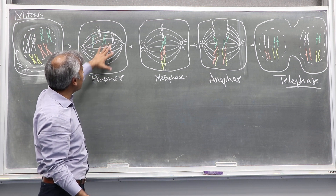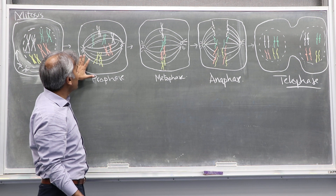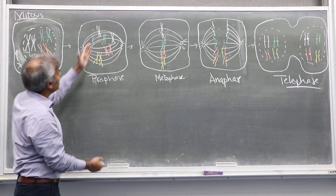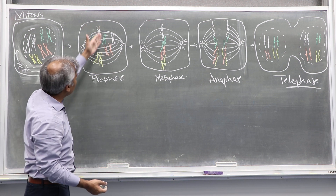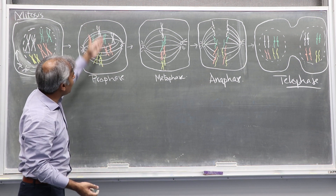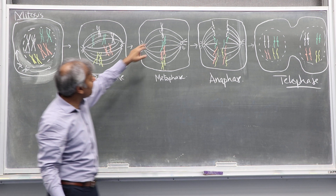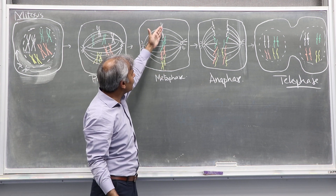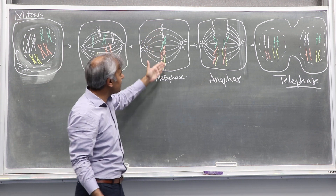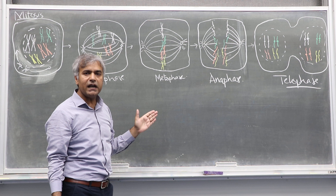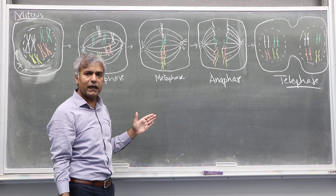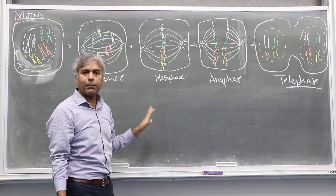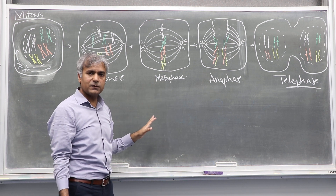Once they are aligned on the spindle apparatus, all of these chromosomes have to come to the middle of the spindle apparatus. When all the chromosomes get aligned on the mid-equatorial plate of the spindle apparatus, that is the metaphase stage.